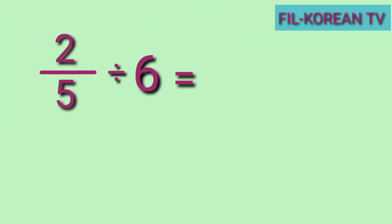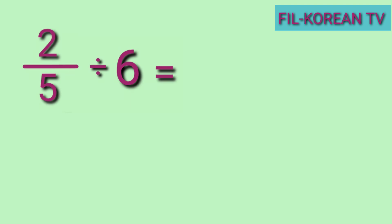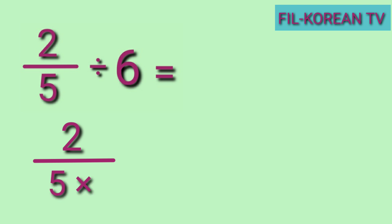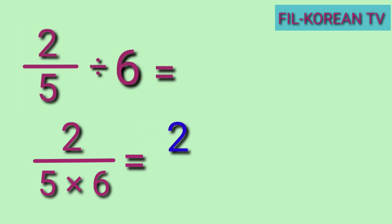Another problem: 2 fifths divided by 6. Copy the numerator 2, then multiply the denominator 5 by the whole number 6. Write the numerator 2, then 5 times 6 equals 30.